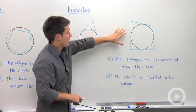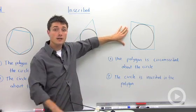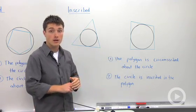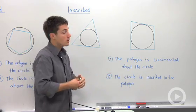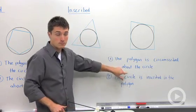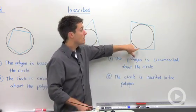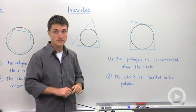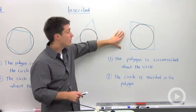So if I look at this quadrilateral, there's two ways that I could describe this picture. The first is the quadrilateral is circumscribed about the circle. Notice that when we use the word circumscribed, we're using about. We could also say that this circle is inscribed inside the quadrilateral. So two different ways to describe the same picture.